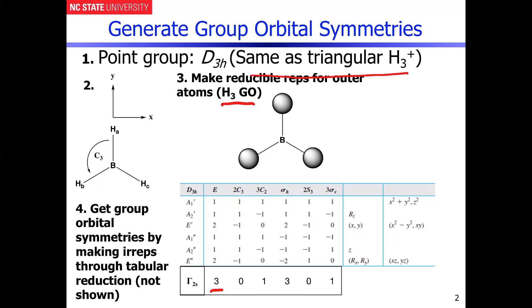So all atoms remain unshifted under the E operation, so that gives us a character of 3. If you do any C3 rotation as illustrated, that's going to interchange all the atoms, so that gives you a character of 0. The C2 operation - now, remember, you can pick any C2-axis you want.